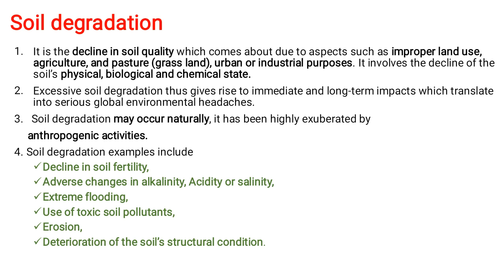Soil degradation may occur naturally, but it has been highly exacerbated by anthropogenic activity — this statement is very important. You might have had this doubt when we started: the quality of a soil could be affected because of some natural phenomenon like an earthquake or flood. So why is it categorized under anthropogenic activity? It is because it is predominantly due to human involvement or human-involved activities, and that is the reason we look at it from an anthropogenic disaster point of view.